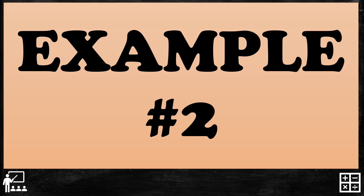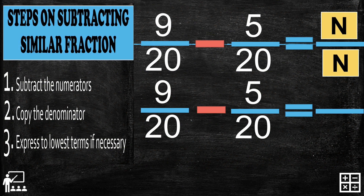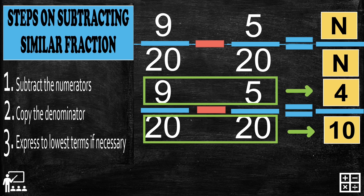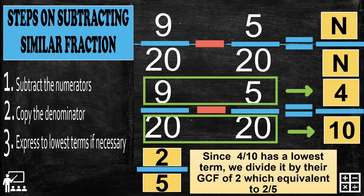Let's proceed to example number 2. Again, subtract the numerators. The numerators are 9 and 5, so 9 minus 5 gives you 4. Copy the denominator for this fraction, which is 20. Express to lowest terms if necessary. 4 over 10 has a lowest term — we divide by their GCF of 2, which gives 2 fifths. So the answer is 2 fifths.